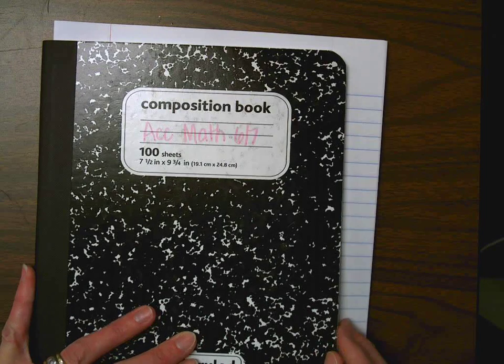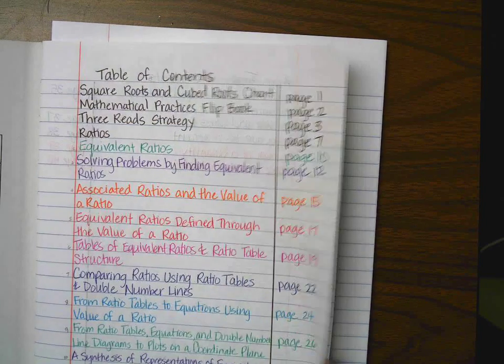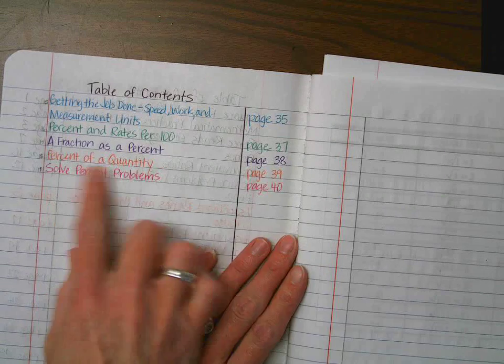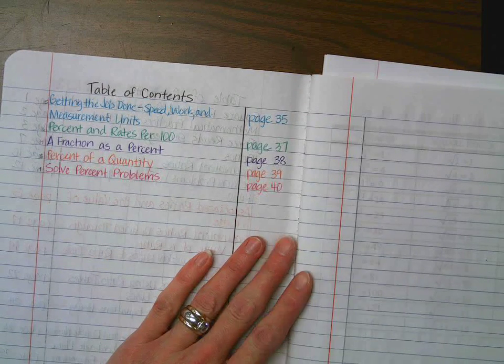Hello, Accelerated Math 6-7 students. We are now going to start video 18, and video 18 is called Percent of a Quantity, and we find that on page 39 in my comp book, so I'm going to turn there now.